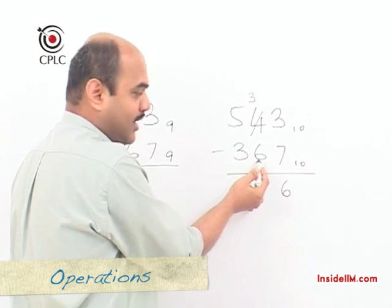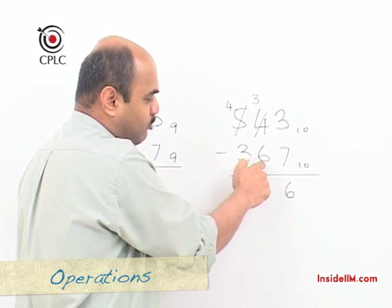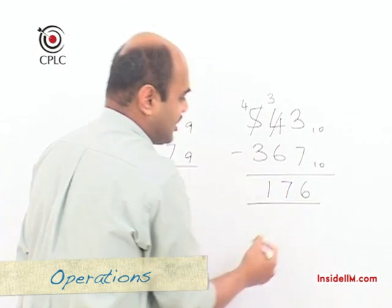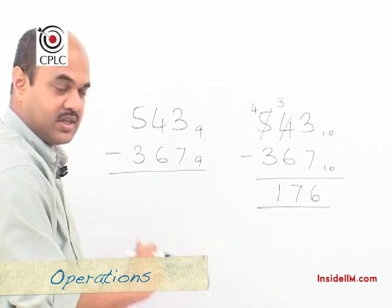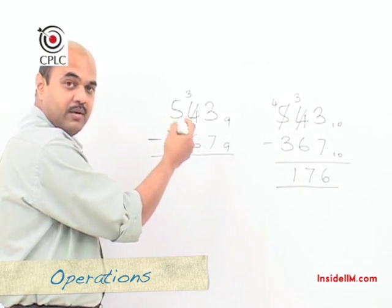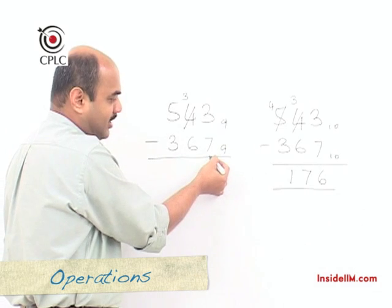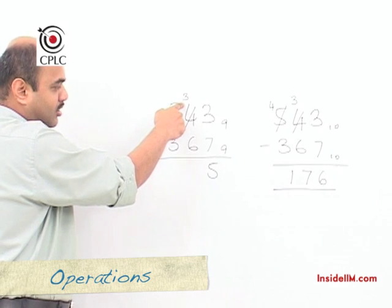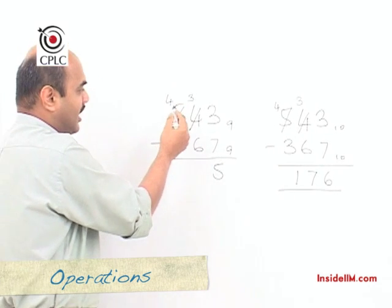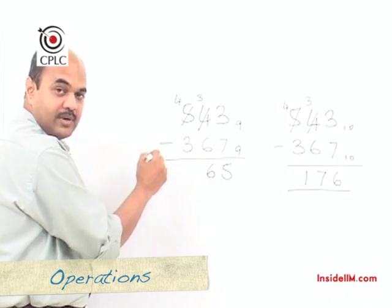Moving to the tens digit: 3 is less than 6, so we borrow again. This digit becomes 4, and we add 10 to get 13, minus 6 gives 7. Then 4 minus 3 gives 1. So 543 minus 367 in base 10 is 176. Now in base 9: when we borrow one base, that base is 9. We add 9 to the digit 3 to get 12, then 12 minus 7 is 5. The next digit 3 is smaller than 6, so we borrow 9 again — 9 plus 3 is 12, and 12 minus 6 is 6. Then 4 minus 3 gives 1.